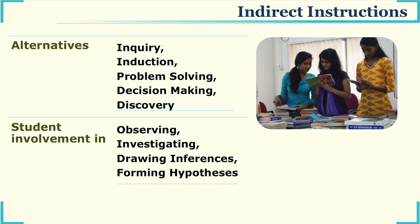Methods for indirect instruction include alternatives like inquiry, induction, problem solving, decision making, or discovery. For example, a class of BA students wondering how to solve the problem of indiscipline would use problem solving combined with decision making. This involves indirect instruction where the teacher is not totally in control — students observe what is happening, investigate the matter, draw inferences from their discussions, and come up with a hypothesis useful in problem solving.